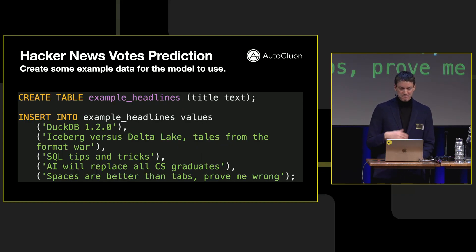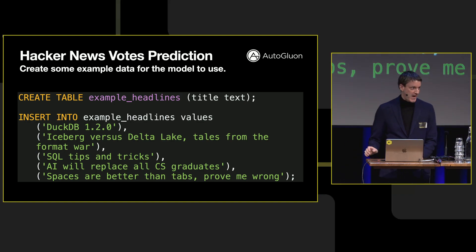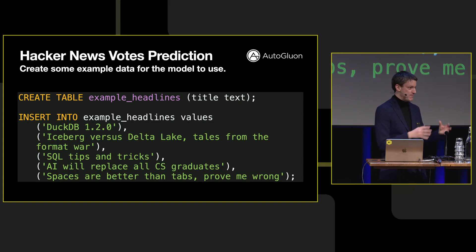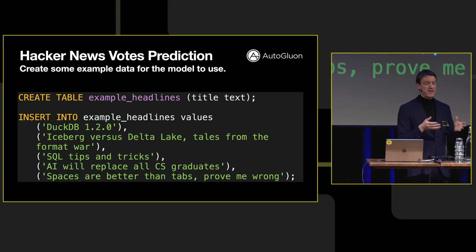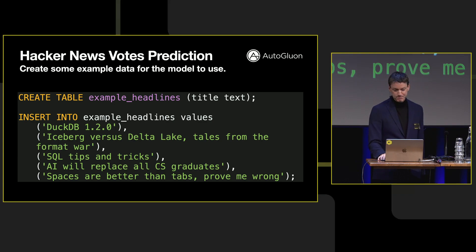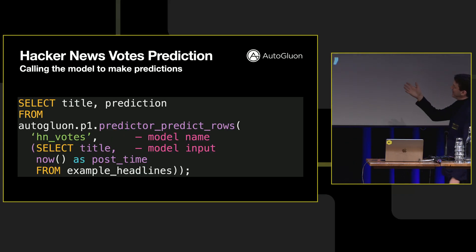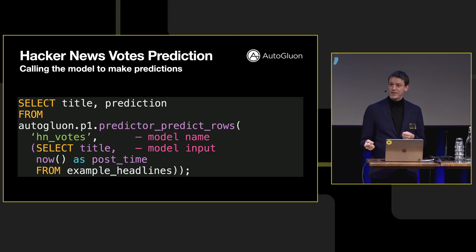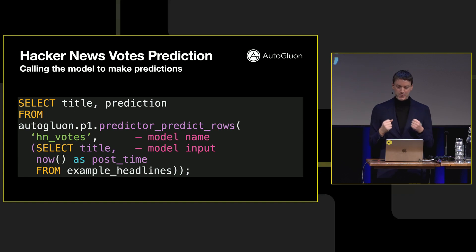Here's where it gets fun. Let's put some examples in — I want to know what the predicted votes will be for these post headlines. Like, Gabor's going to post the DuckDB 1.2 release pretty soon and needs to know if he should put new keywords in there. So rather than having him do a whole Jupyter Notebook with a bunch of feature engineering, just use this. SELECT a title, the prediction (which will be the predicted votes), from predictor_predict_rows using the model name — this is a table-in-out function, so I can supply the data I want to send to the predictor.